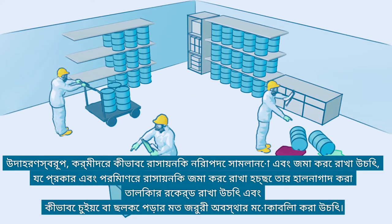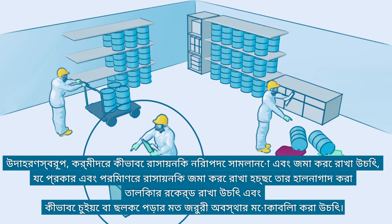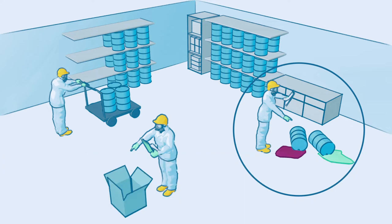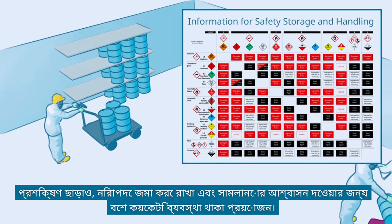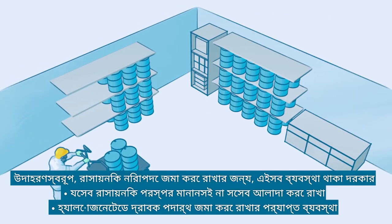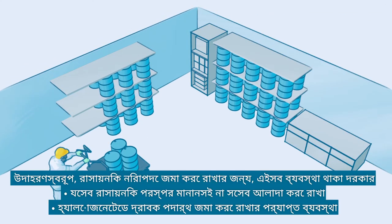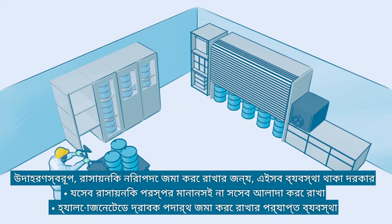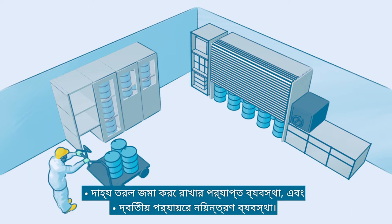For example, how workers should safely handle and store chemicals. Maintain updated inventory records on types and amounts of chemicals being stored, and respond to emergencies such as a leak or spillage. In addition to training, a number of provisions may be necessary to guarantee safe storage and handling, such as separation of incompatible chemicals, adequate storage of halogenated solvents, adequate storage of flammable liquids, and secondary containments.